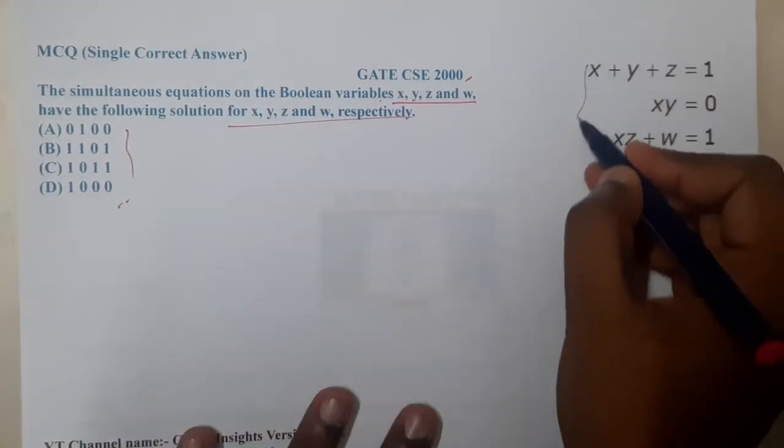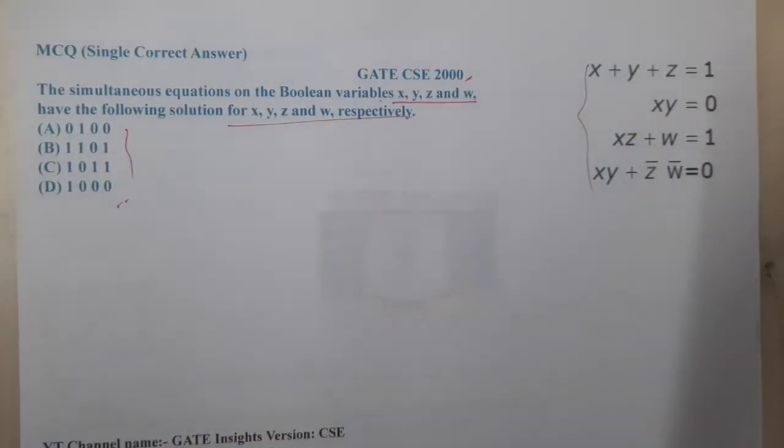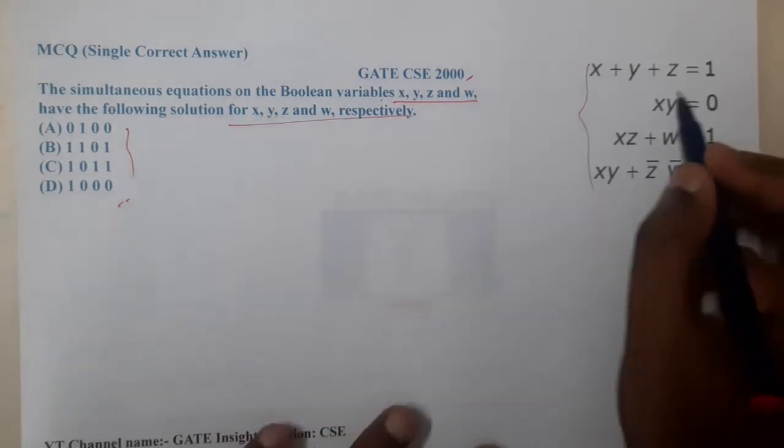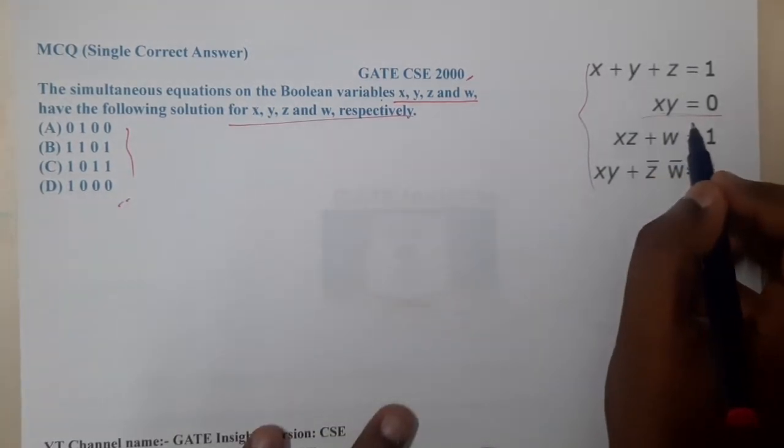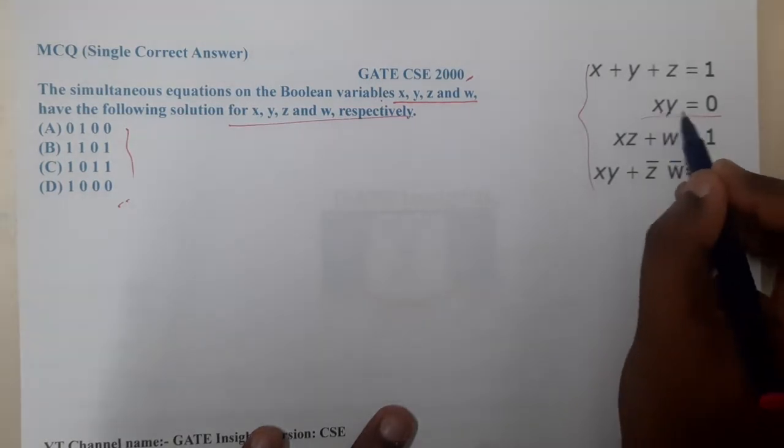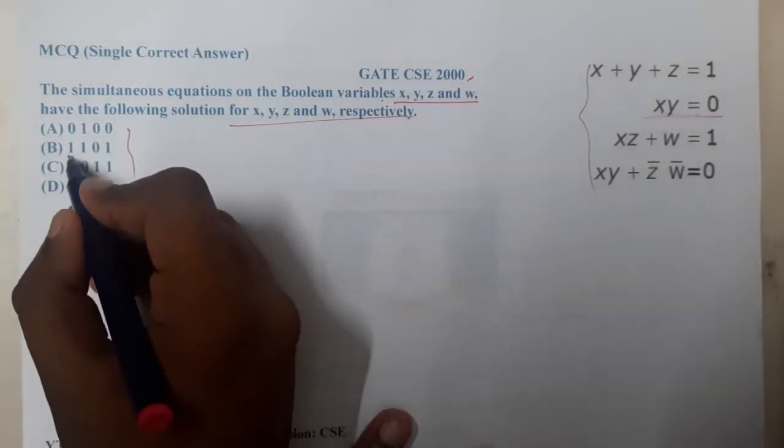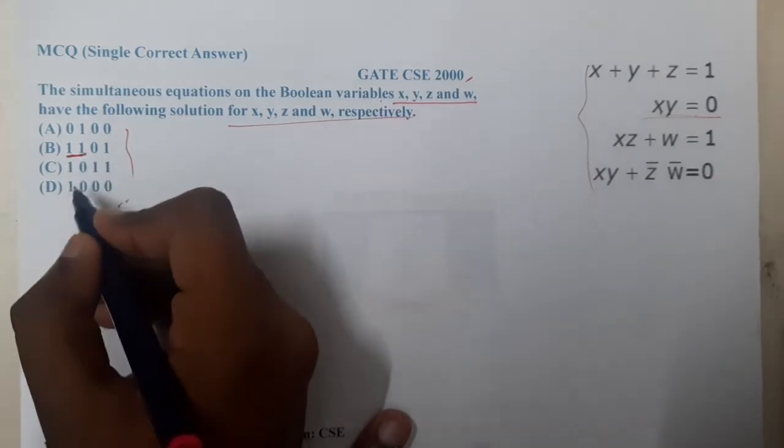Only one of them will satisfy all four equations. With easy understanding, most of you can identify option B easily. That is x times y equals zero. If you take option B and multiply x times y, you are not going to get zero, hence this option is wrong.